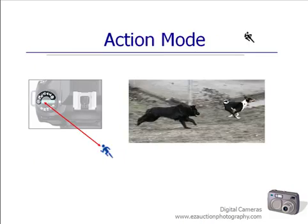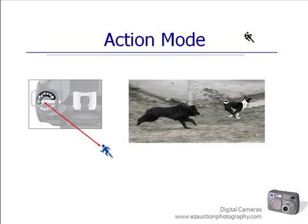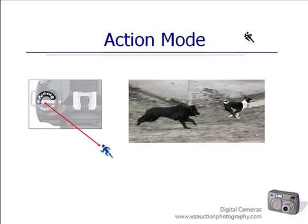There's another mode called the action mode, the running man mode, or you may have one called kids and pets. This does exactly what you'd imagine — it helps you freeze action. If you're at the track, you've got kids running, dogs or cats, or you're trying to freeze cars at the racetrack as they go by, this is the mode you want. It is designed for freezing action.